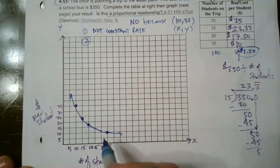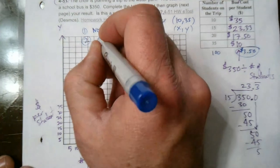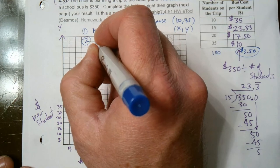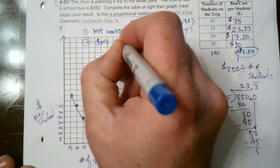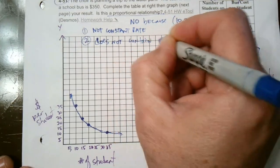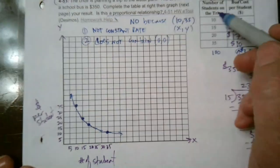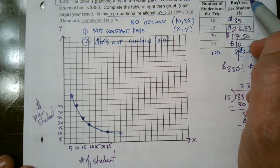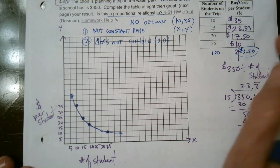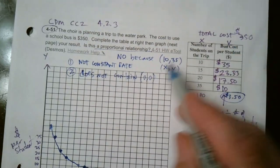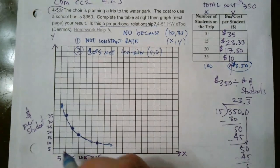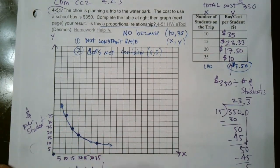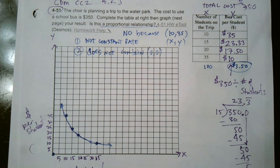And the other thing that it always has to do is it has to contain 0, 0. So does not contain 0, 0. Meaning, if there were 0 students, it would cost me 0. Well, no. No matter what, the bus is 350. So if I want to go on this field trip and it's just the teacher and I have no students and I'm taking the bus, it's still going to cost me 350. So no matter what, the bus is 350. So there is no 0, 0. And if I look at my graph, I can see 0, 0 is here. This thing will never end up crossing that 0, 0. So this is not a proportional relationship. There you go.